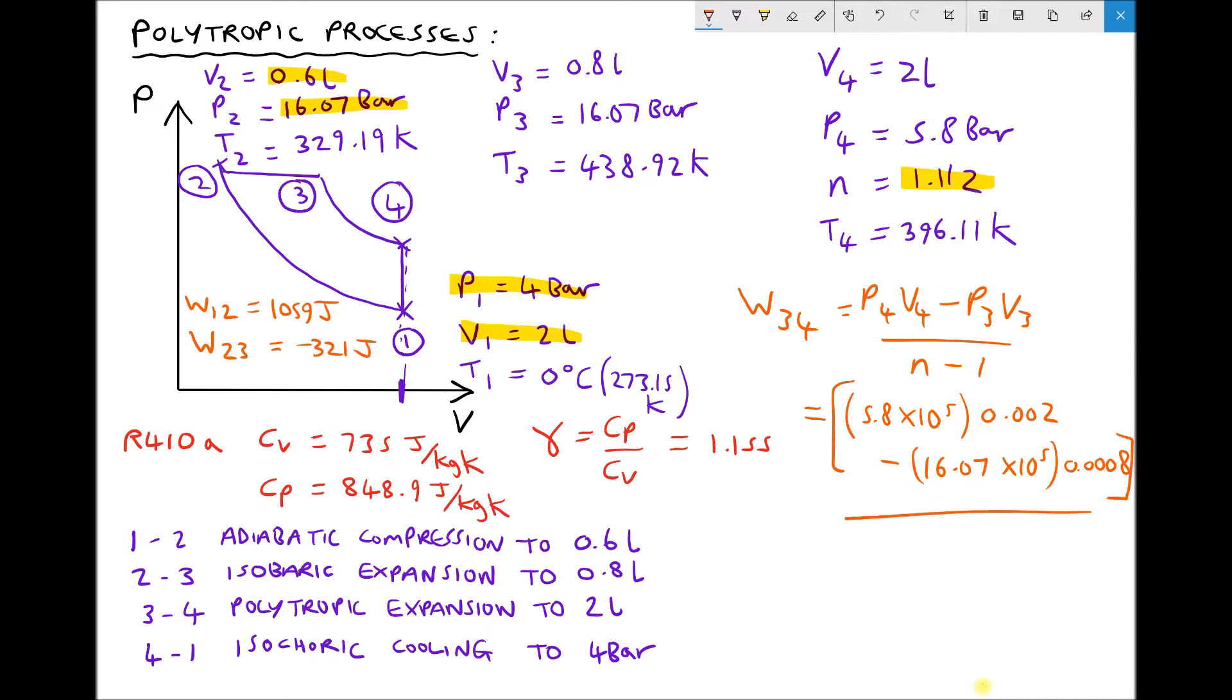Because it's all of that divided by N minus 1. N is 1.112, 1.112 minus 1 is 0.112, giving us a work done moving from 3 to 4 equal to minus 1121 joules.